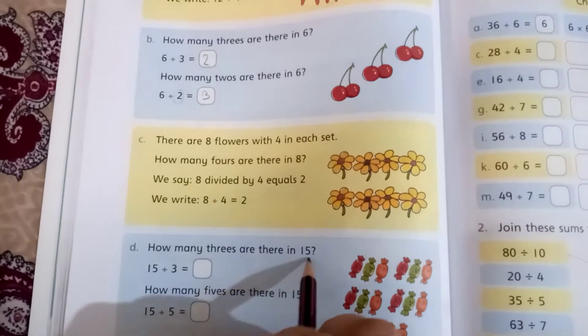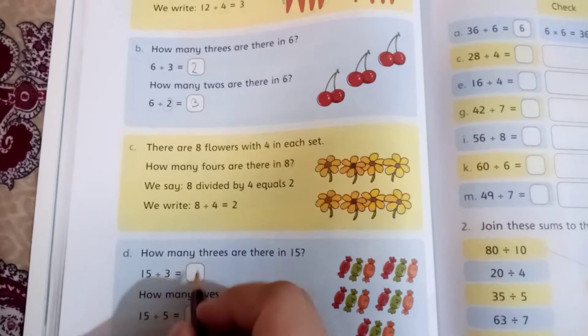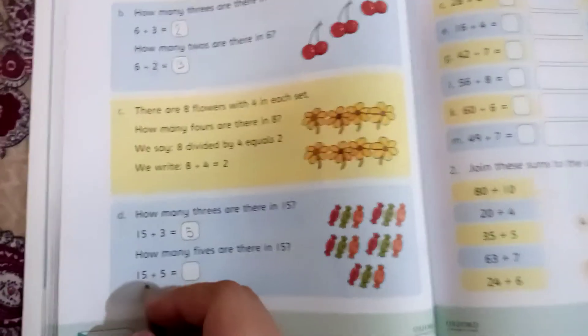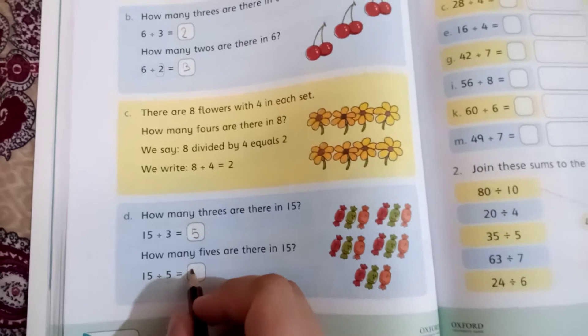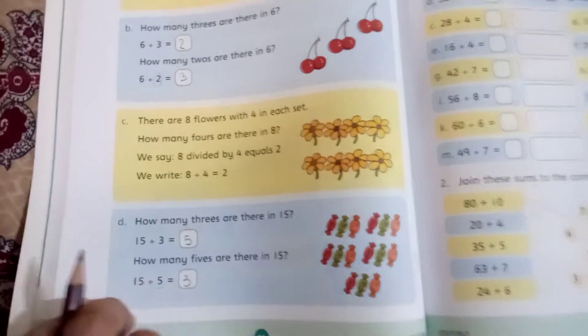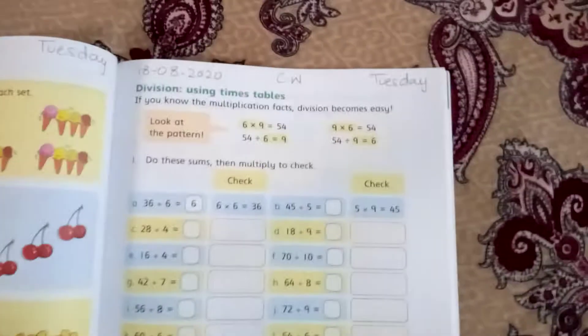How many 3s are there in 15? How many 5s are there in 15? Five 3s are 15.